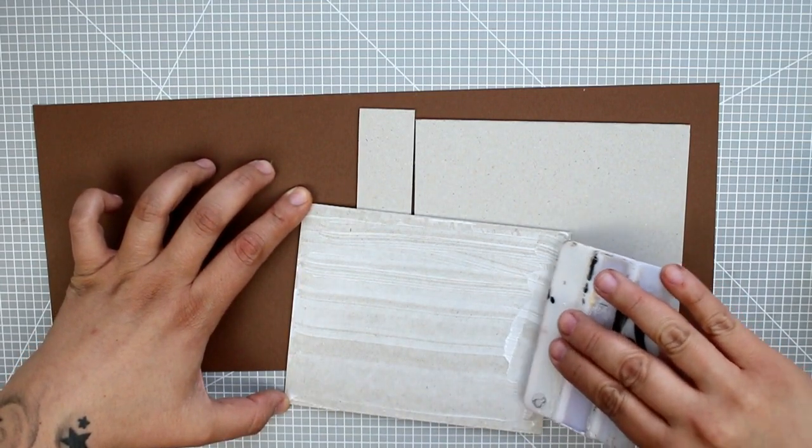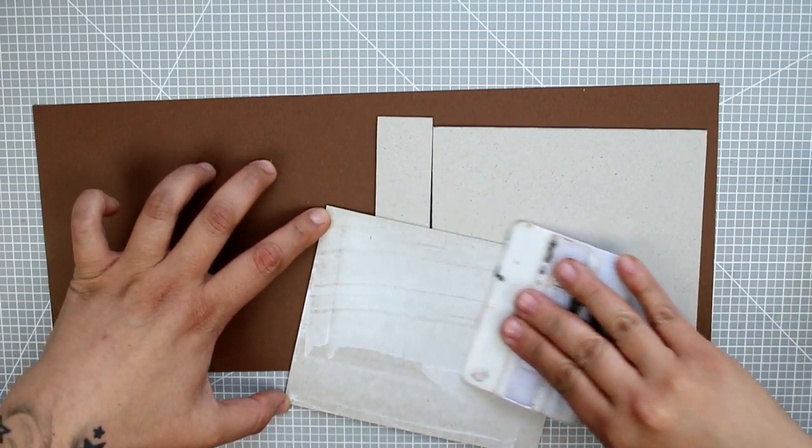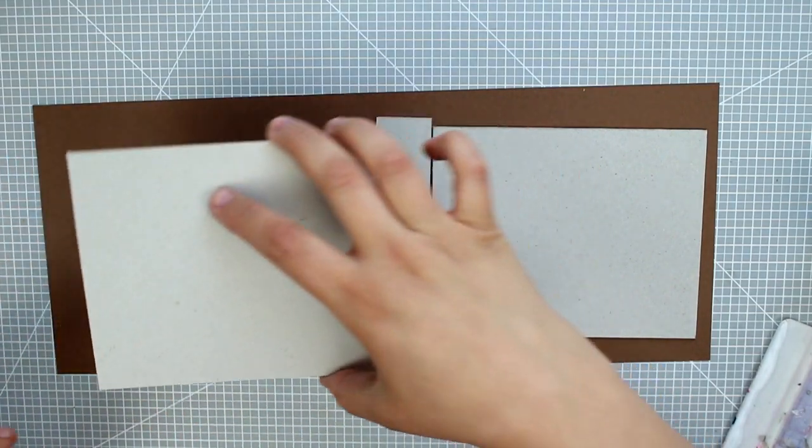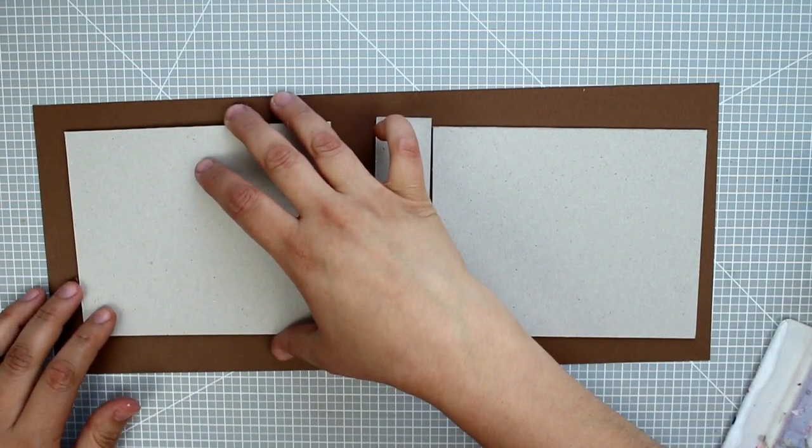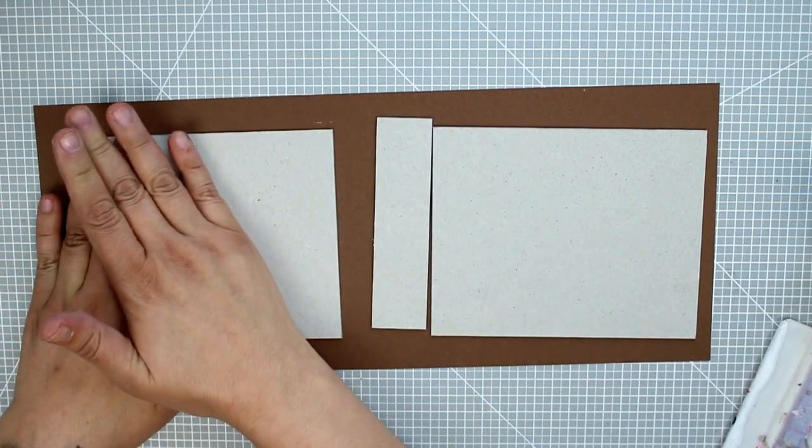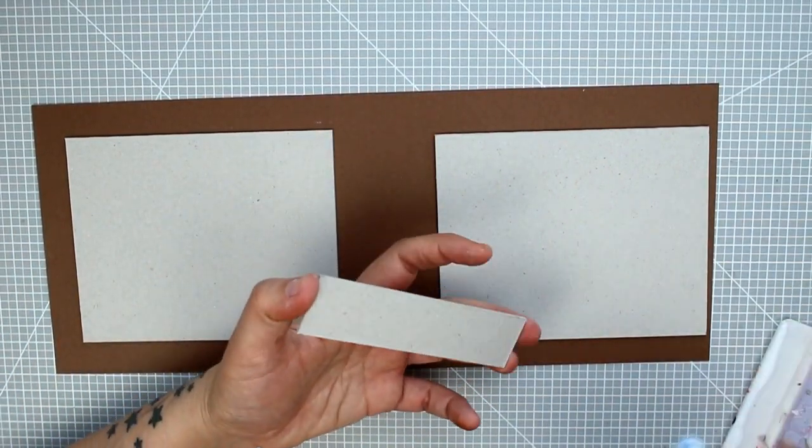To spread it well, insisting on the margins. And we're gluing piece by piece on the cardstock piece, more or less centered. We press well and move on to the next one.